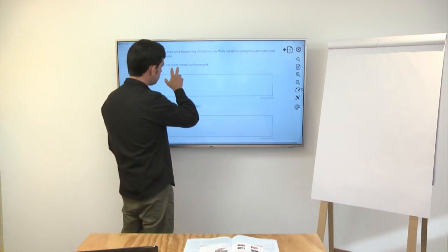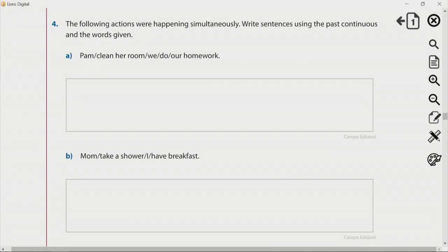Por exemplo, Pam cleaned her room. We do our homework. Lembra que a gente viu lá as palavras? While, então, vamos fazer a letra A aqui como exemplo. Eu tenho aqui, vou dizer que a Pam estava limpando o quarto dela. Então, vamos primeiro para a primeira etapa. Pam. Como o Pam é o mesmo que she, eu vou usar o verbo to be no passado com was. Aí, was cleaning. Was cleaning her room. Primeira ação está aqui. Pam was cleaning her room. Agora, eu preciso dizer que, enquanto isso, nós estávamos fazendo o nosso trabalho de casa, o nosso dever de casa. Para usar a palavra, para ligar as duas frases, eu vou usar while. Então, while we were doing our homework. While we were doing our homework. Ok?